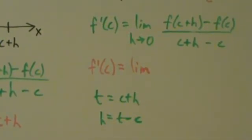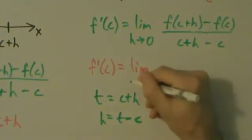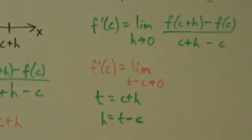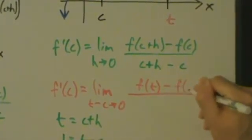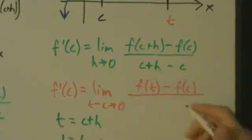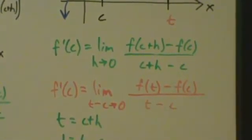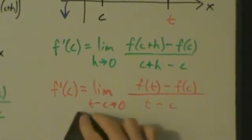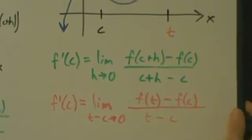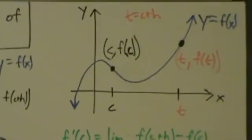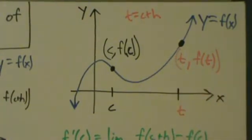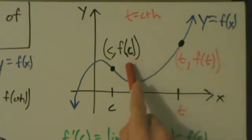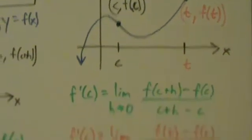So this becomes the limit as t minus c goes to zero. Instead of c plus h in the numerator, we now have t. So this is f of t minus f of c. And then c plus h in the denominator becomes t, so this is t minus c. Going back to the graph, this expression matches it: the change in y is f of t minus f of c, and the change in x is t minus c.